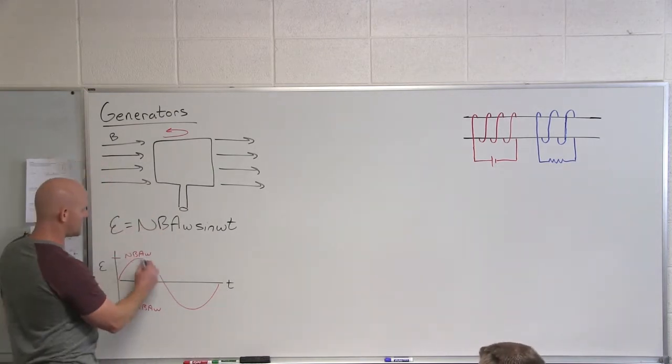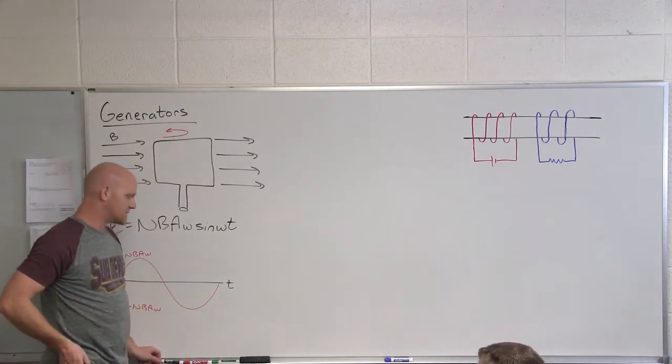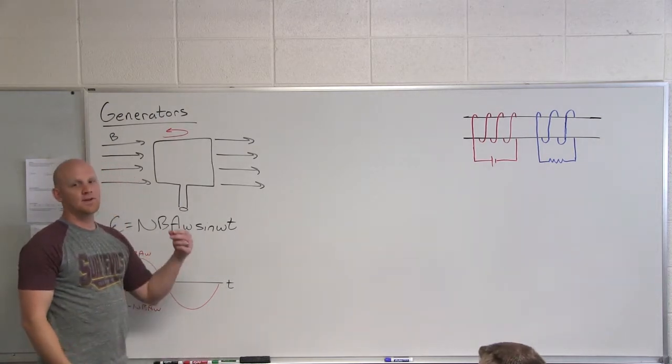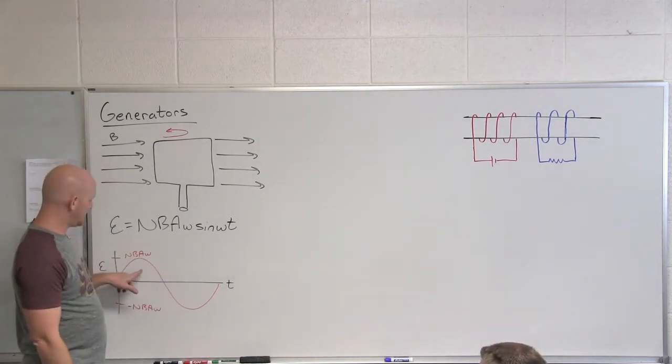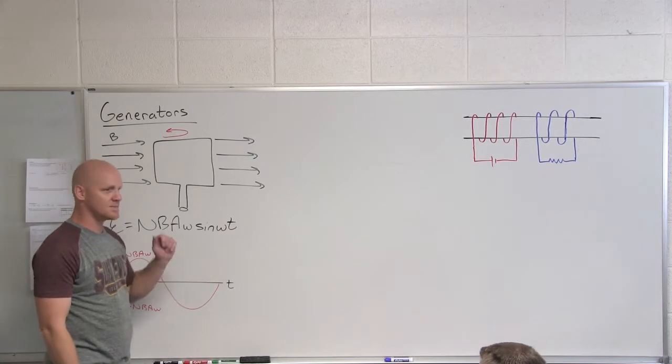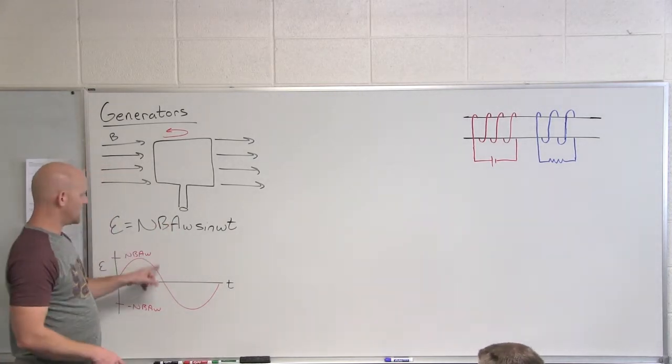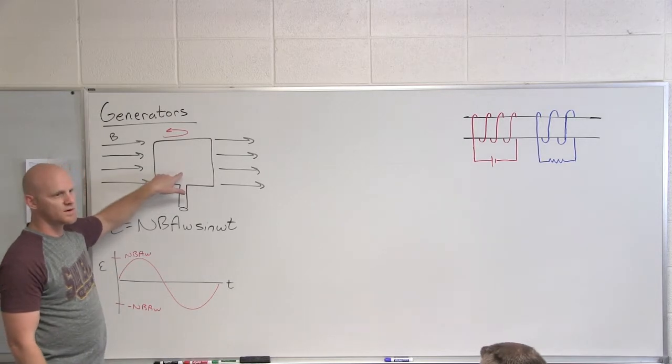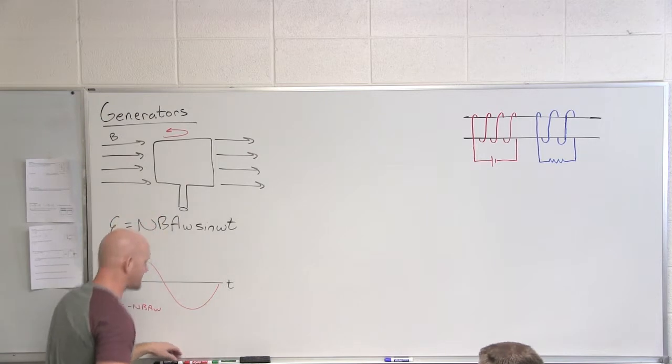And instead of looking like this, it would go and then go back up again. But the other problem is that with direct current, I need a fairly constant current. So even if we cure this polarity problem where it's always in the same direction, is it a constant current though? No. It's still going to fluctuate, and so what they do is they don't just use a single coil. They use a number of coils all out of phase.